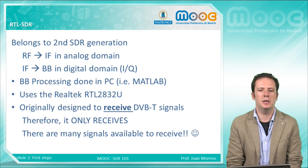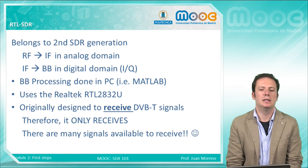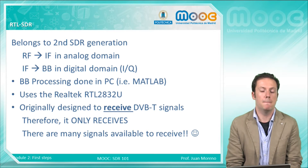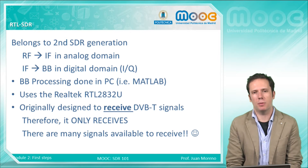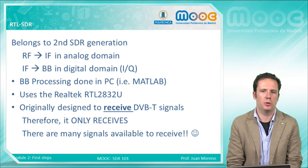This device, the RTL, uses the Realtek 2832U chipset. Remember that it was originally designed to receive television signals, but with some modifications it is able to work as a general-purpose receiver.